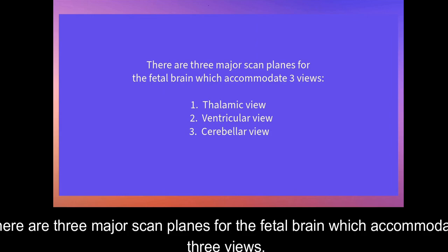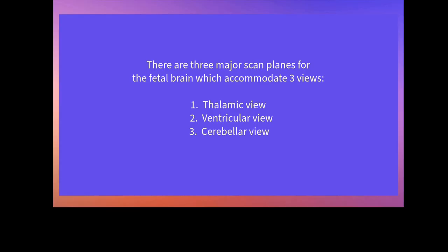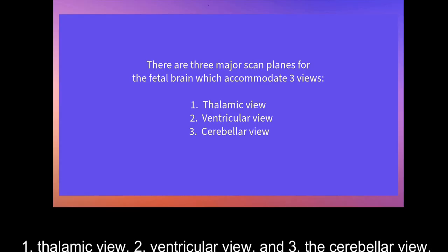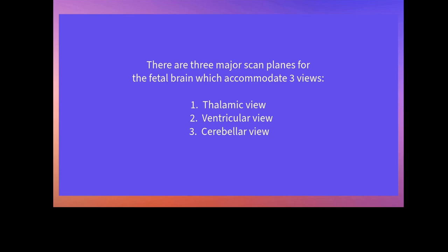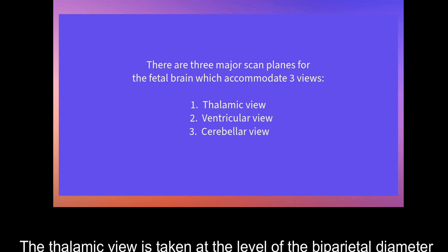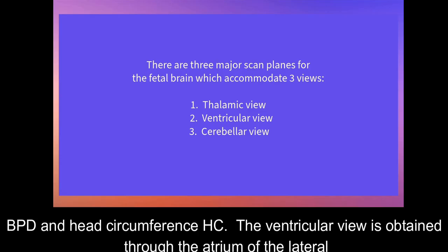There are three major scan planes for the fetal brain which accommodate three views: 1. Thalamic view, 2. Ventricular view, and 3. The cerebellar view. The thalamic view is taken at the level of the biparietal diameter, BPD, and head circumference, HC.